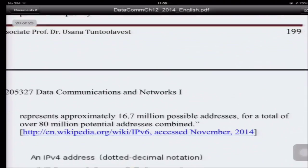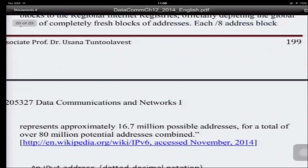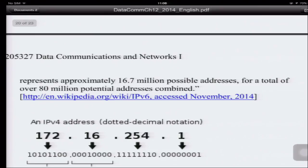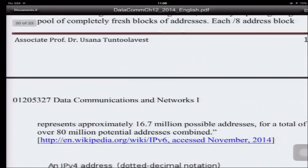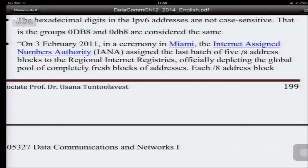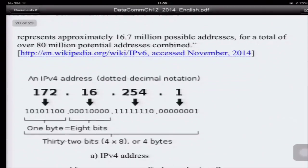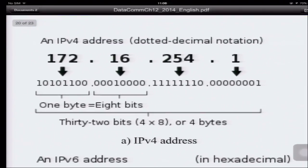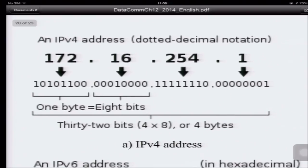Each of those blocks represents about 16.7 million possible addresses, for a total of about 80 million potential addresses combined. Basically what I'm trying to say is that all of the IPv4 internet addresses are gone. So we have to use a longer address, and we increase from 32 bits to 128 bits.